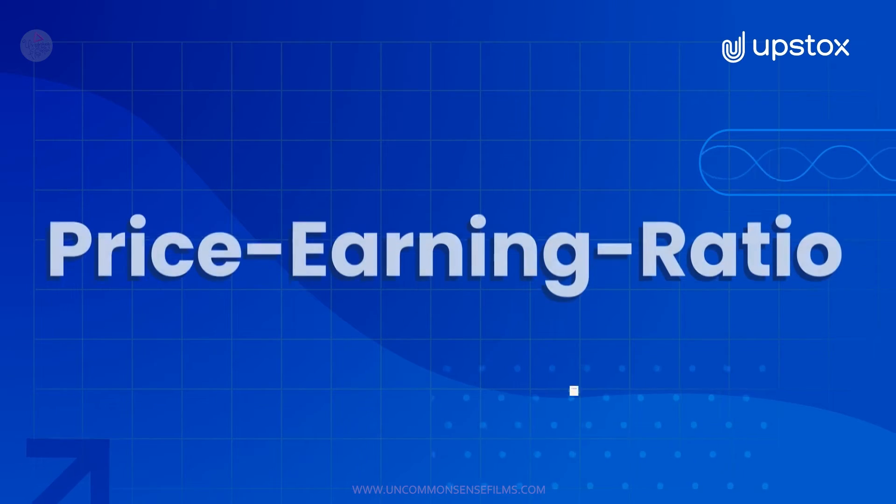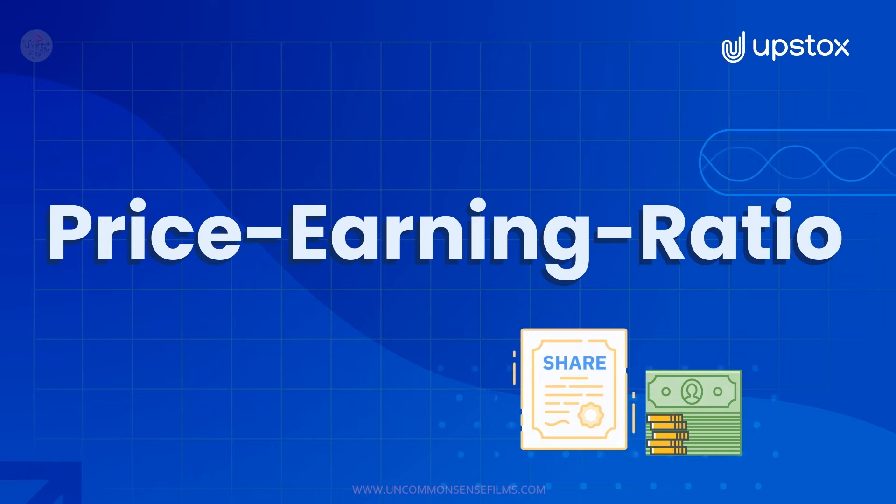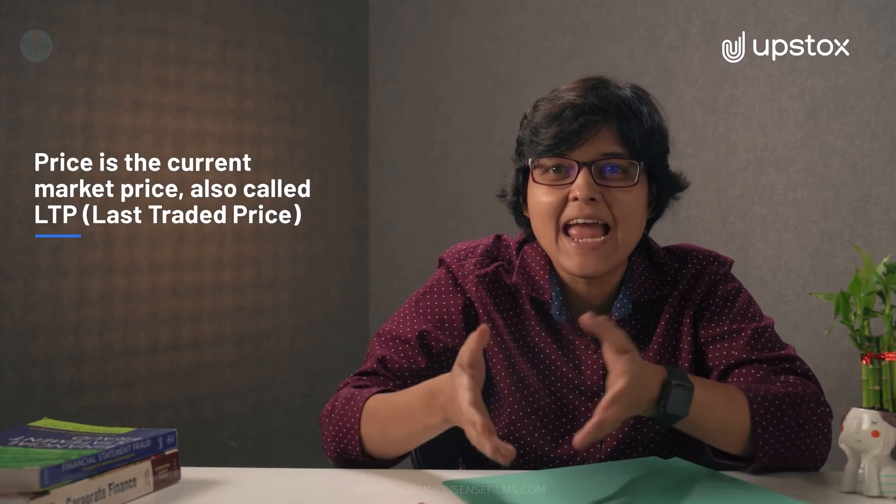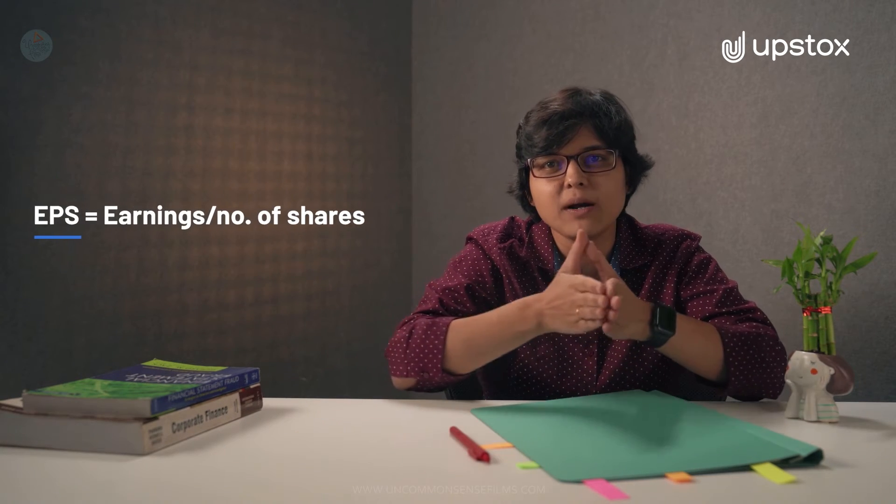So let's move on to our next ratio which is price to earning ratio. What is price? Price is nothing but the current market price. We call that as LTP as well, last traded price. Now if I move on to earnings, this part is generally EPS, that is nothing but earnings per share. So let's take an example.